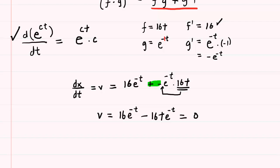We can solve for t by noting that there is a greatest common factor here. We have a greatest common factor of 16e to the negative t. You can see this term obviously has a 16e to the negative t, and this other term also has it. So you factor out 16e to the negative t and that would leave you with inside of the parentheses one minus t. And this is set equal to zero.